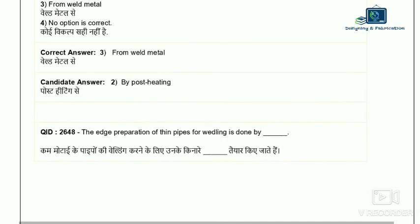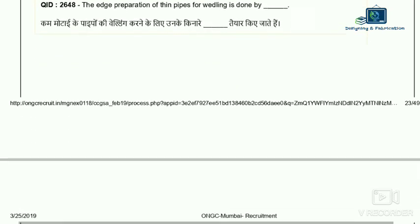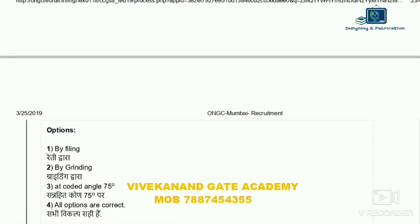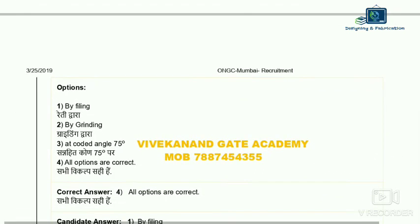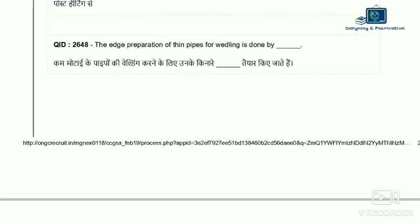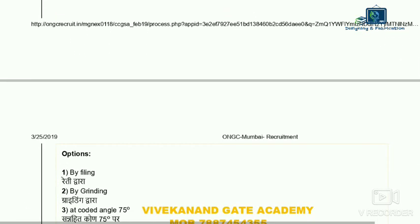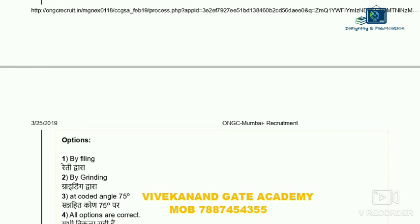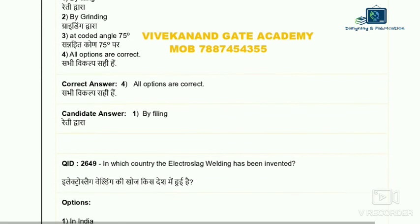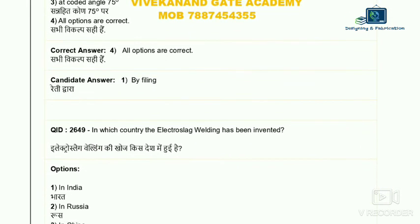Question 48: edge preparation of thin pipes for welding is done by which method? Options are: by filing, by grinding, at angle 75 degrees, or all options are correct. For thin-walled pipes, edge preparation can be done by filing, grinding, or at 75 degrees. So the correct answer is all options are correct — option four.